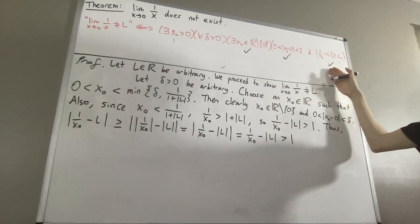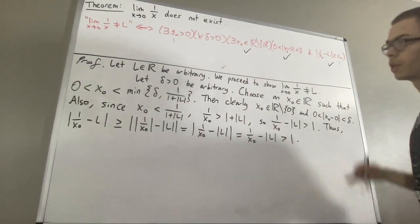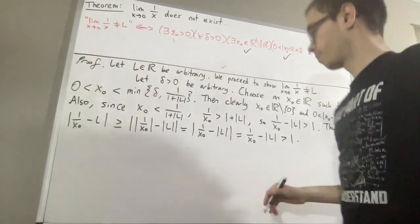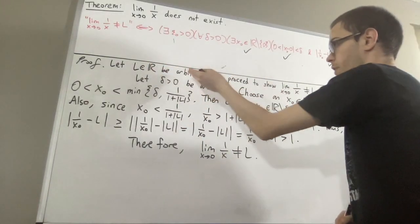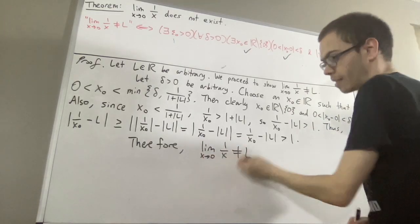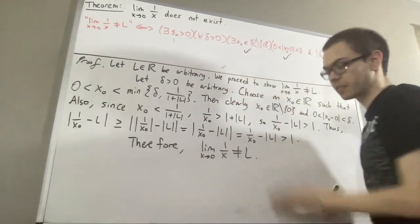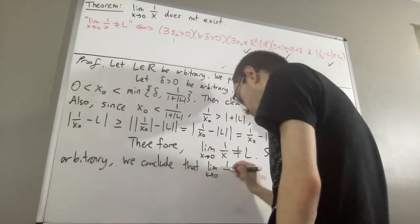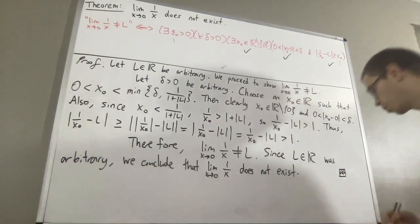So our x naught satisfies all the required conditions. We have shown that this statement is true, and therefore the limit is not equal to L. But since L was an arbitrary real number, this shows that the limit as x approaches 0 of 1 over x is not equal to any real number. Therefore the limit does not exist, and this completes the proof.